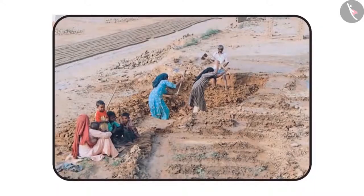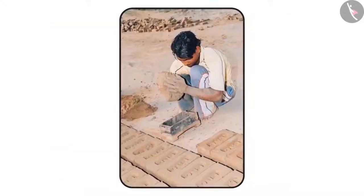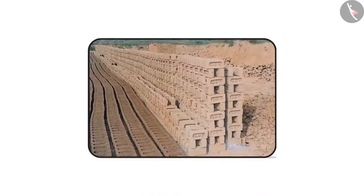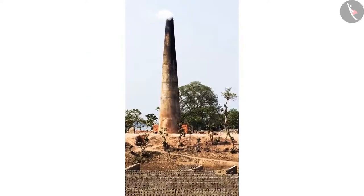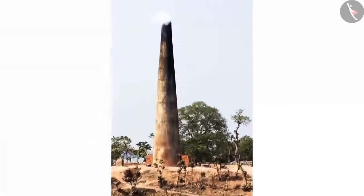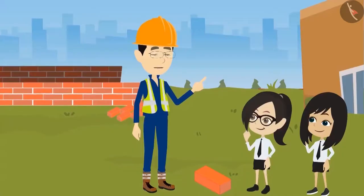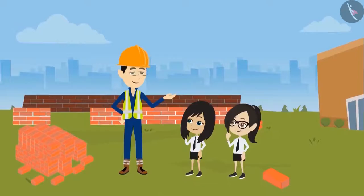Clay is used to make bricks. Water is added to soil and a dough is made, like what your mom makes for chapatis. Then it is put in a mold to give it the shape of a brick. The brick is then taken out of the mold and baked in a furnace until it gets hard and strong. You must have seen the furnace at many places. This is how bricks are made.